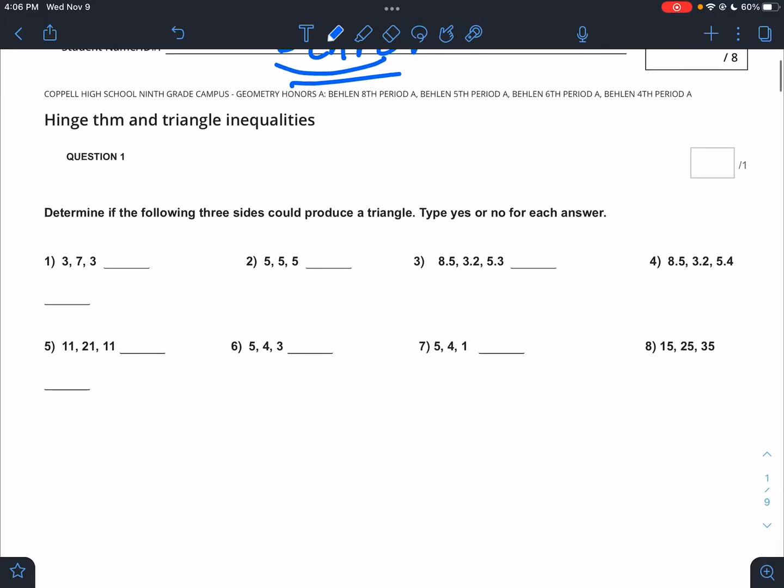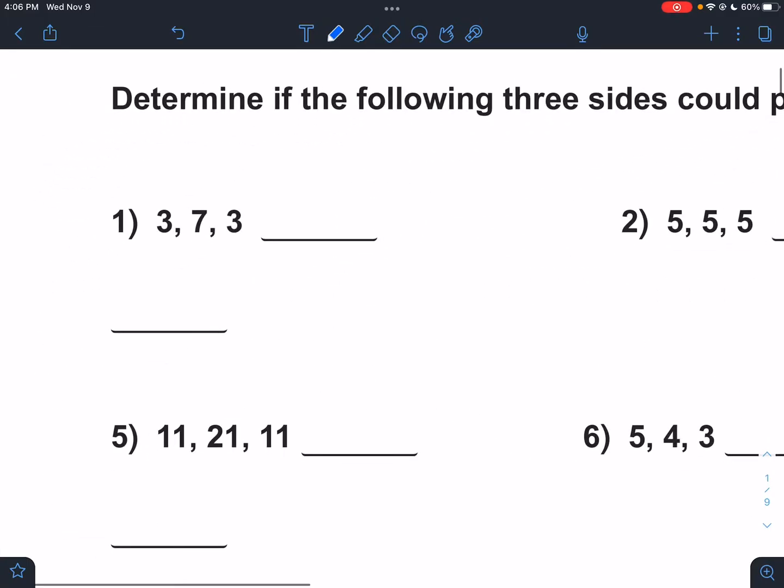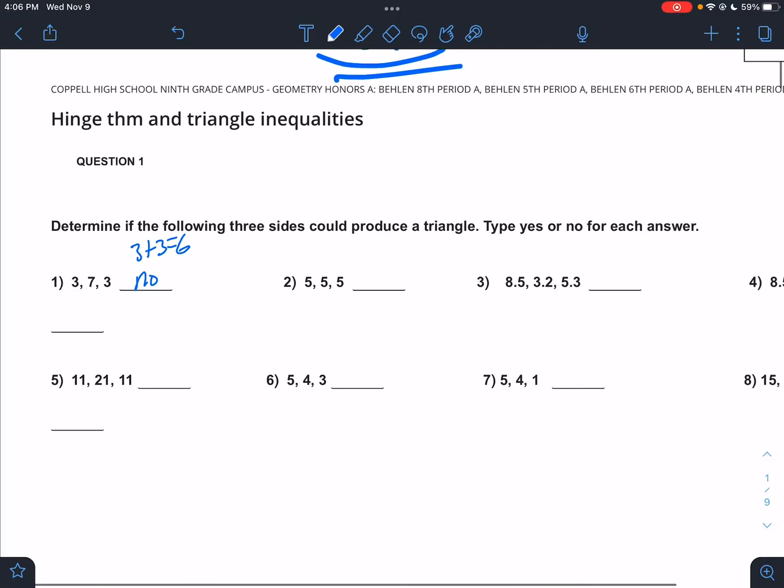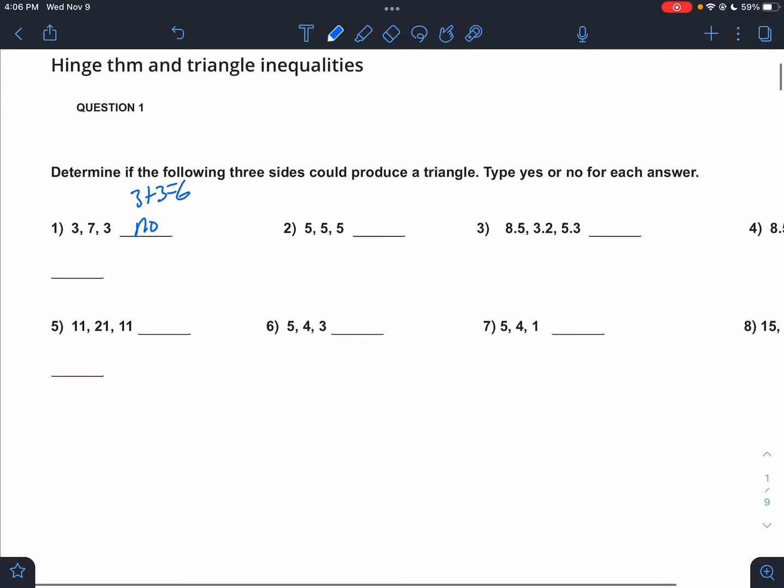But I know it's tough, I want you guys to have this information. Here we have 3, 3, and 7. What are we going to do? How do we figure this out? 3 plus 3 is 6, that's less than 7, not going to work. Type yes or no for each answer. 3 plus 3 is 6, not going to work.